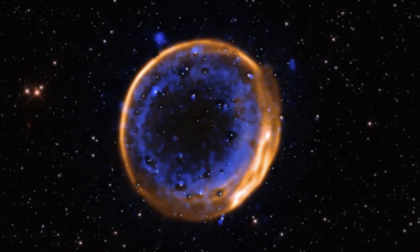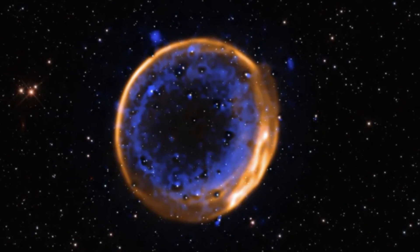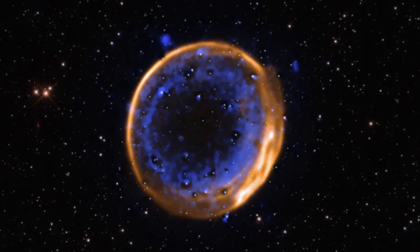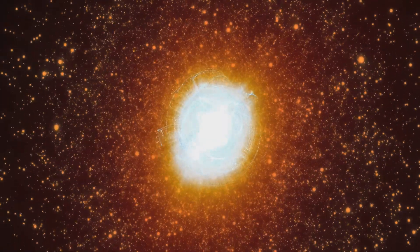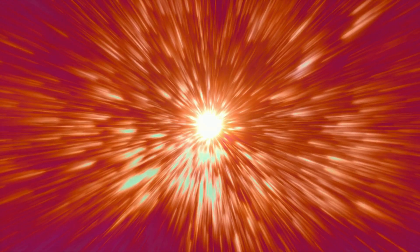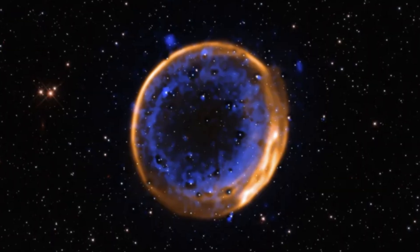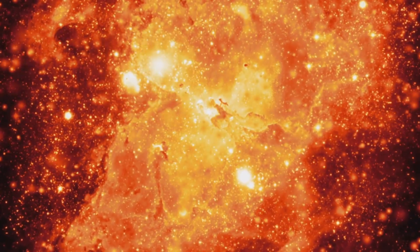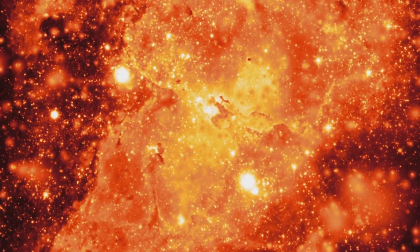Enter the double detonation model. Here, a thin helium layer on the white dwarf ignites first, triggering a second, catastrophic core explosion. This two-stage process creates a supernova with a unique chemical signature and lopsided debris pattern. Double detonations explain the oddball supernova that didn't match the standard candle profile. They reveal the universe is more complex and more explosive than we imagined.